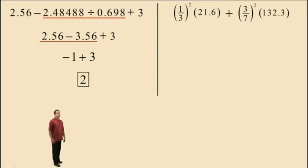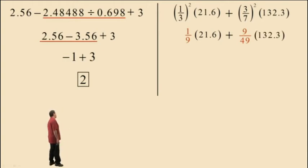In this problem, the first thing you need to do is evaluate those exponents. 1/3 squared means 1/3 times 1/3 which is 1/9. Let's bring down our work. 3/7 squared means 3/7 times 3/7 which is 9/49. And bring down the 132.3.